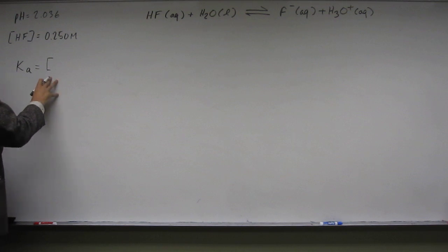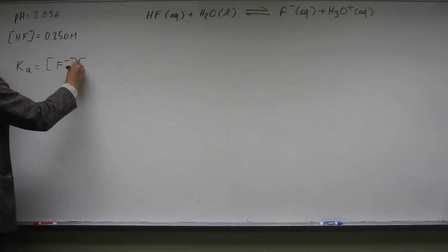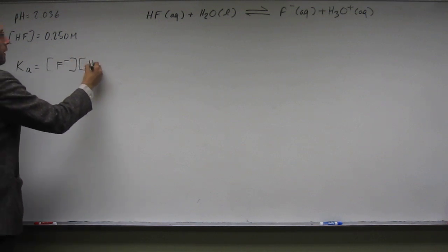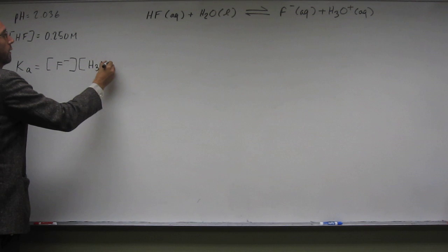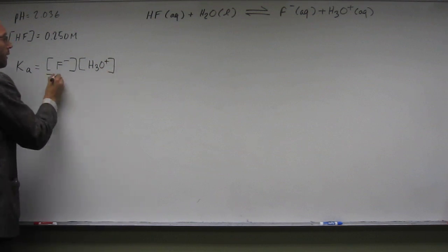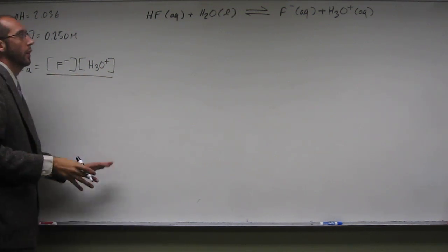So in this case, the products are going to be a concentration of F minus times the concentration of H3O plus divided by the concentration of the reactants.